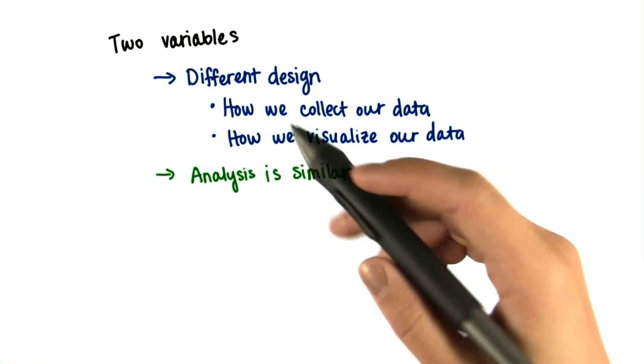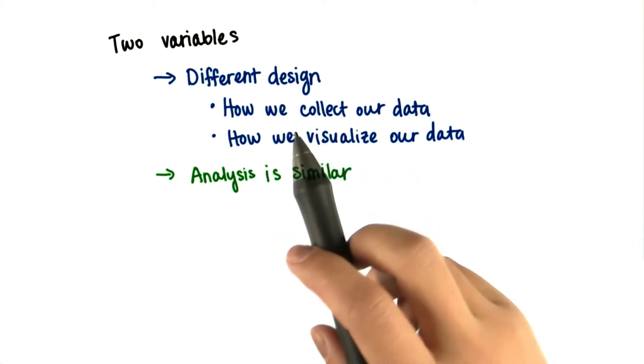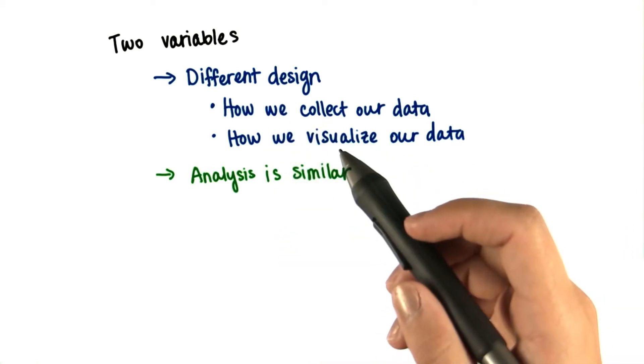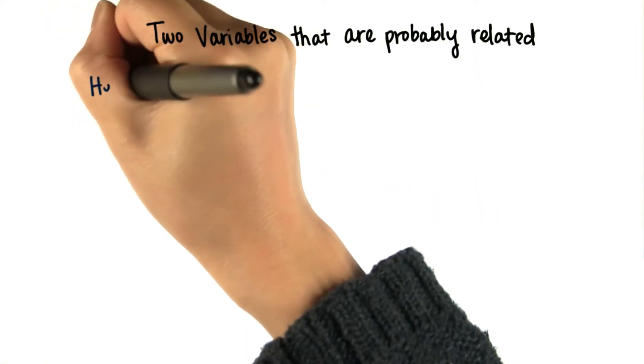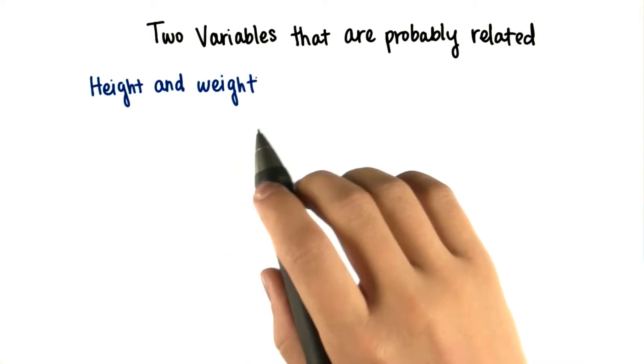Now that we're starting to discuss two variables instead of just one, let's start by thinking about two variables that might be related to each other. For example, height and weight. People who are taller usually weigh more.